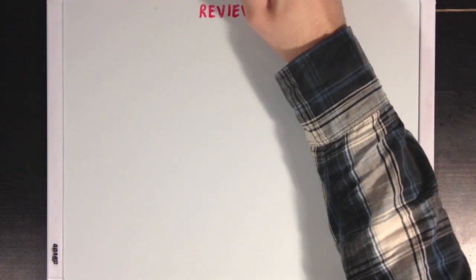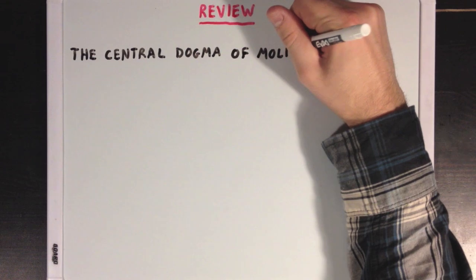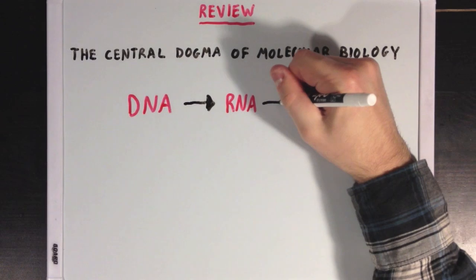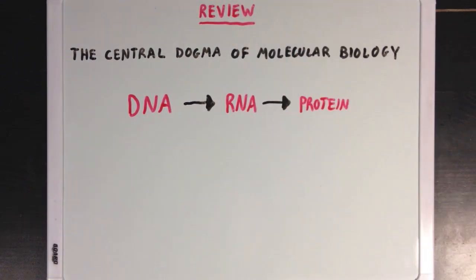But first, I want to review the central dogma of molecular biology, and how the genetic information of a cell is stored in the form of DNA, which is then transcribed to form RNA, and then translated to generate protein.